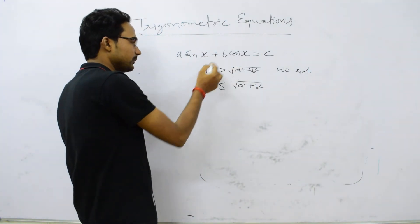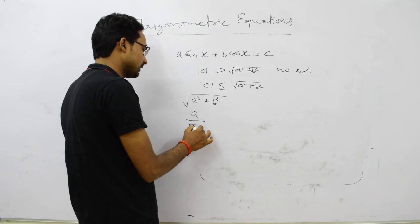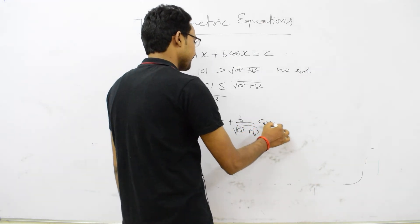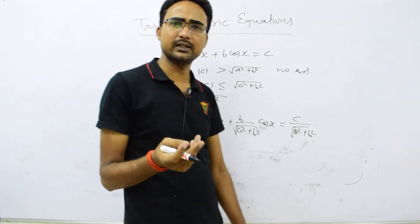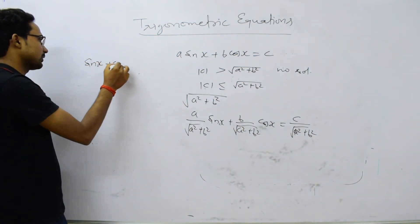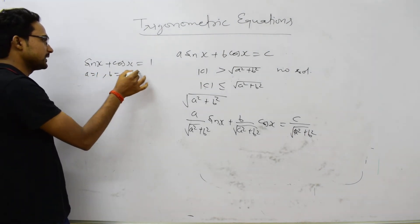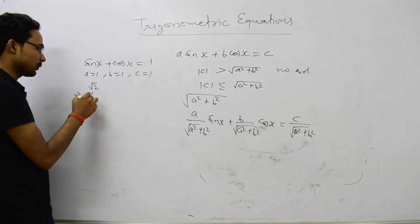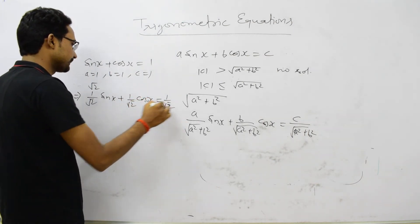Dividing through by √(A² + B²), we get (A/√(A²+B²)) sin x + (B/√(A²+B²)) cos x = C/√(A²+B²). For example, with sin x + cos x = 1, a = 1, b = 1, c = 1, so √(a²+b²) = √2. Dividing by √2: (1/√2) sin x + (1/√2) cos x = 1/√2.